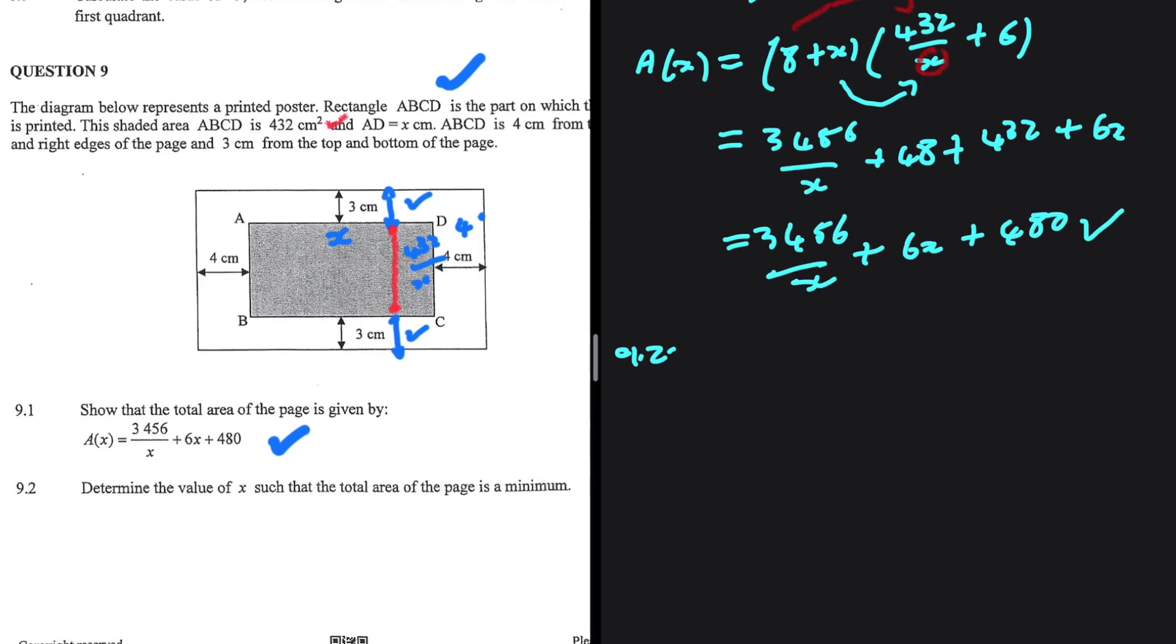A(x) = 3456/x + 6x + 480. We can rewrite this as A(x) = 3456x^(-1) + 6x + 480.